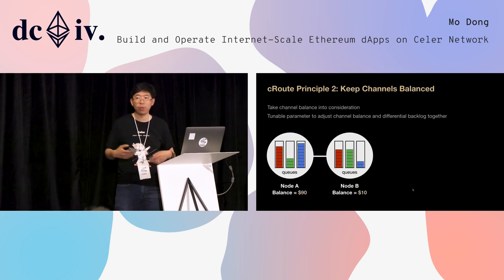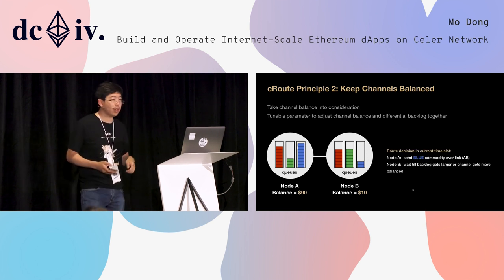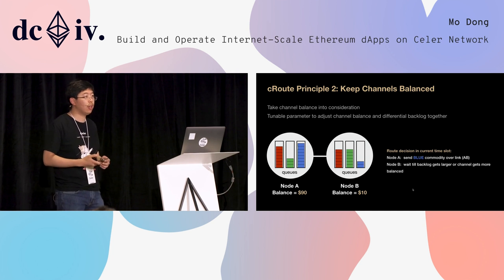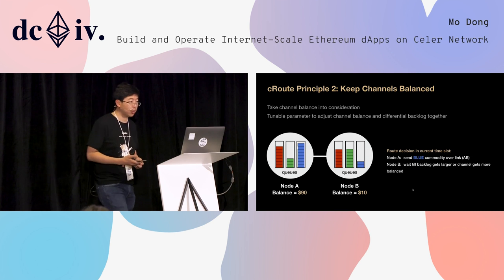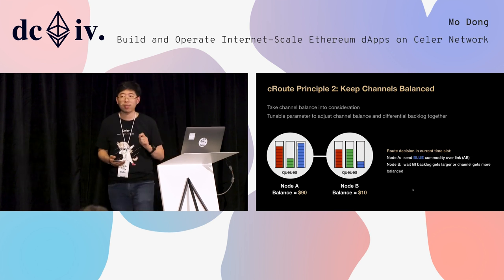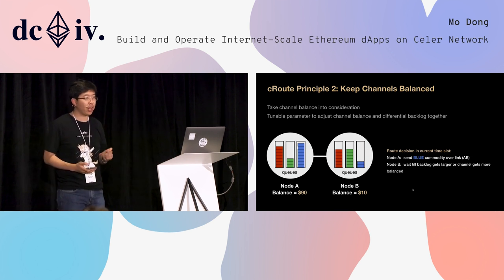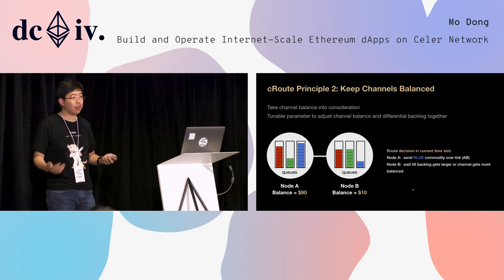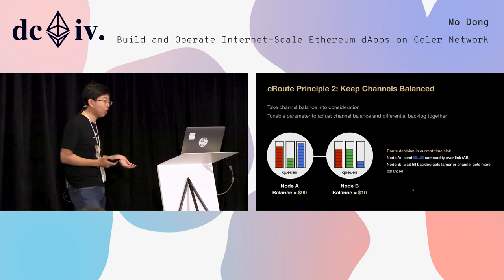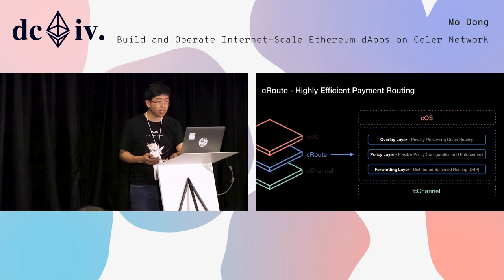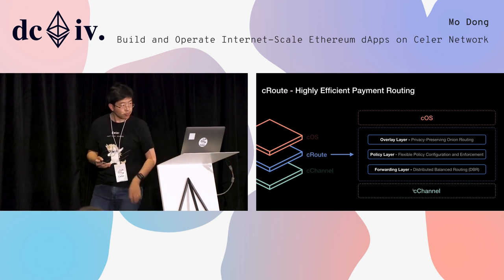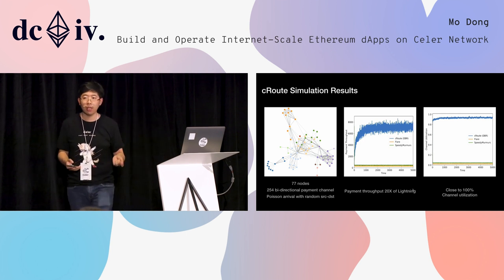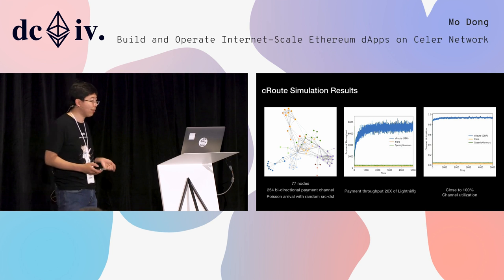The second principle is that cRoute will keep the channel balanced. The key part here is that cRoute is still a decentralized algorithm — you talk to your neighbors about the pressure you're delivering to each of your peers, and the pressure information gets propagated through the network. cRoute is the first ever provably optimal routing algorithm, meaning we can prove in theory that given any arrival process of payments, no other algorithm can exceed the performance of cRoute. In simulation, we have observed cRoute can achieve more than 20 times higher performance compared to naive routing algorithms like shortest path routing.